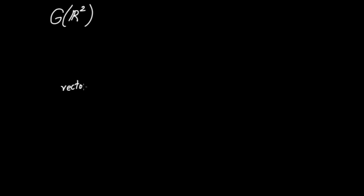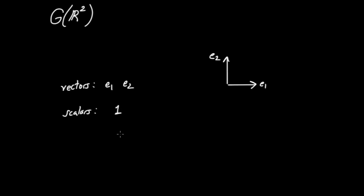Let's keep track of the mathematical objects we've introduced in the geometric algebra of R2. We started with vectors — we had two vectors: E1, pointing in the horizontal direction (some people call this i, I call it E1), and E2, a vertically directed vector (some people call this j). Then we talked about the dot product between the two, which led us to scalars, represented by the number 1. Then we talked about the wedge product, which introduced new objects called bivectors — specifically E1 wedge E2, which we can write as E1E2.